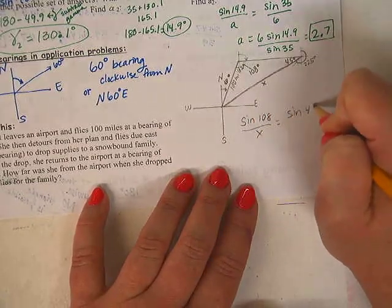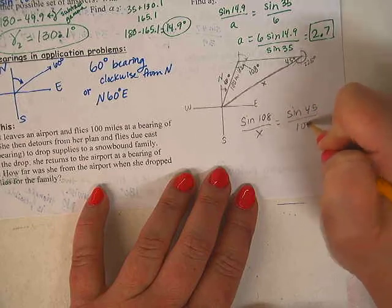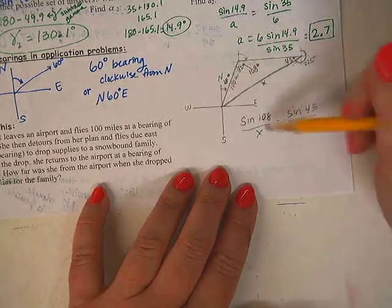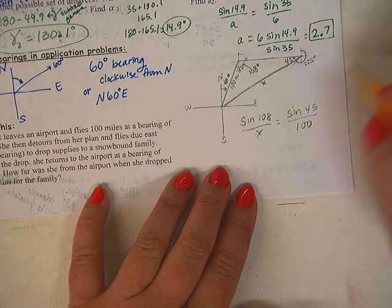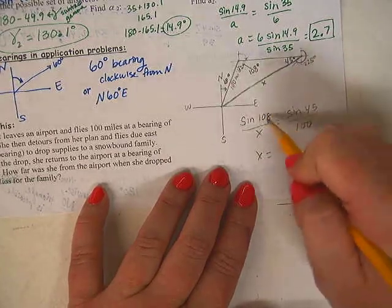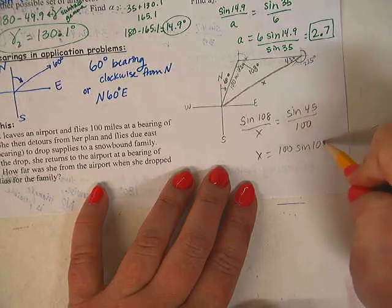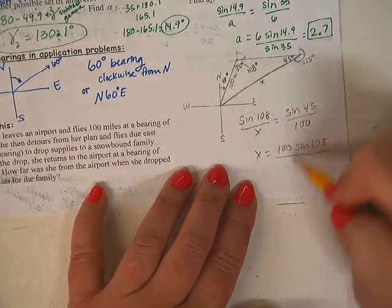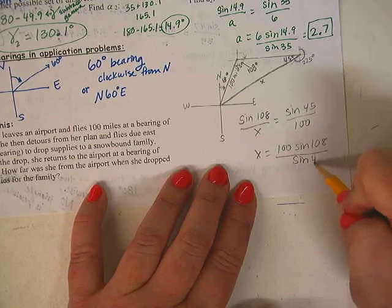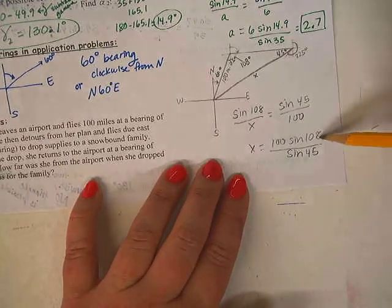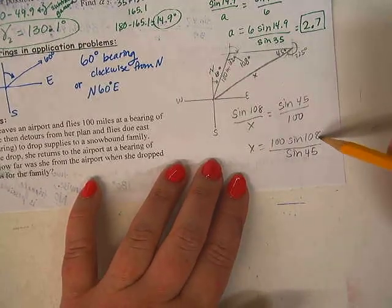You just go like sine 108 over x equals sine of 45 over 100. And then you cross multiply and solve for x. So that would give us x equals 100 times the sine of 108 and then divided by the sine of 45.